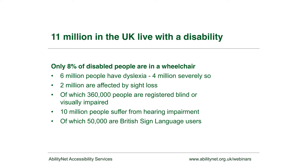Of those 11 million, only 8% are in a wheelchair - so we're talking about the 92% who aren't. Six million have dyslexia, and in the adult population that's at least 10 to 15%, of which 4 million have it to the extent that it affects their reading - whether they know they've got it or not. Dyspraxia is a related condition. It's an invisible disability. You won't necessarily know whether you've got it, because only you can see the world the way you see it.